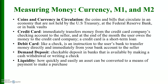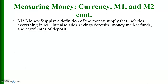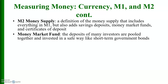Liquidity refers to how quickly and easily an asset can be converted as a means of payment to make a purchase. M1 money supply is a narrow definition of the money supply that includes currency and checking accounts in banks, and to a lesser degree travelers' checks. M2 includes everything in M1 but also adds savings deposits, money market funds, and certificates of deposit. Money market funds are deposits where money from many investors is pooled together and invested in a safe way, like short-term government bonds.